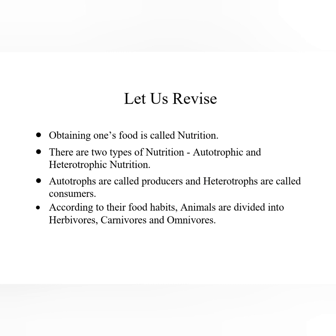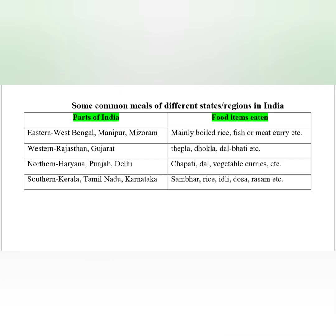Now coming to the next topic: variety of food. In our country, people of different states have different food habits. In the northern part of India — like Delhi, Haryana, Punjab — their main food is chapati, dal, and vegetable curry. In the southern part of India, main food items are rice, sambar, rasam, idli, etc. Food habits are affected by food production, supply, and climatic conditions.